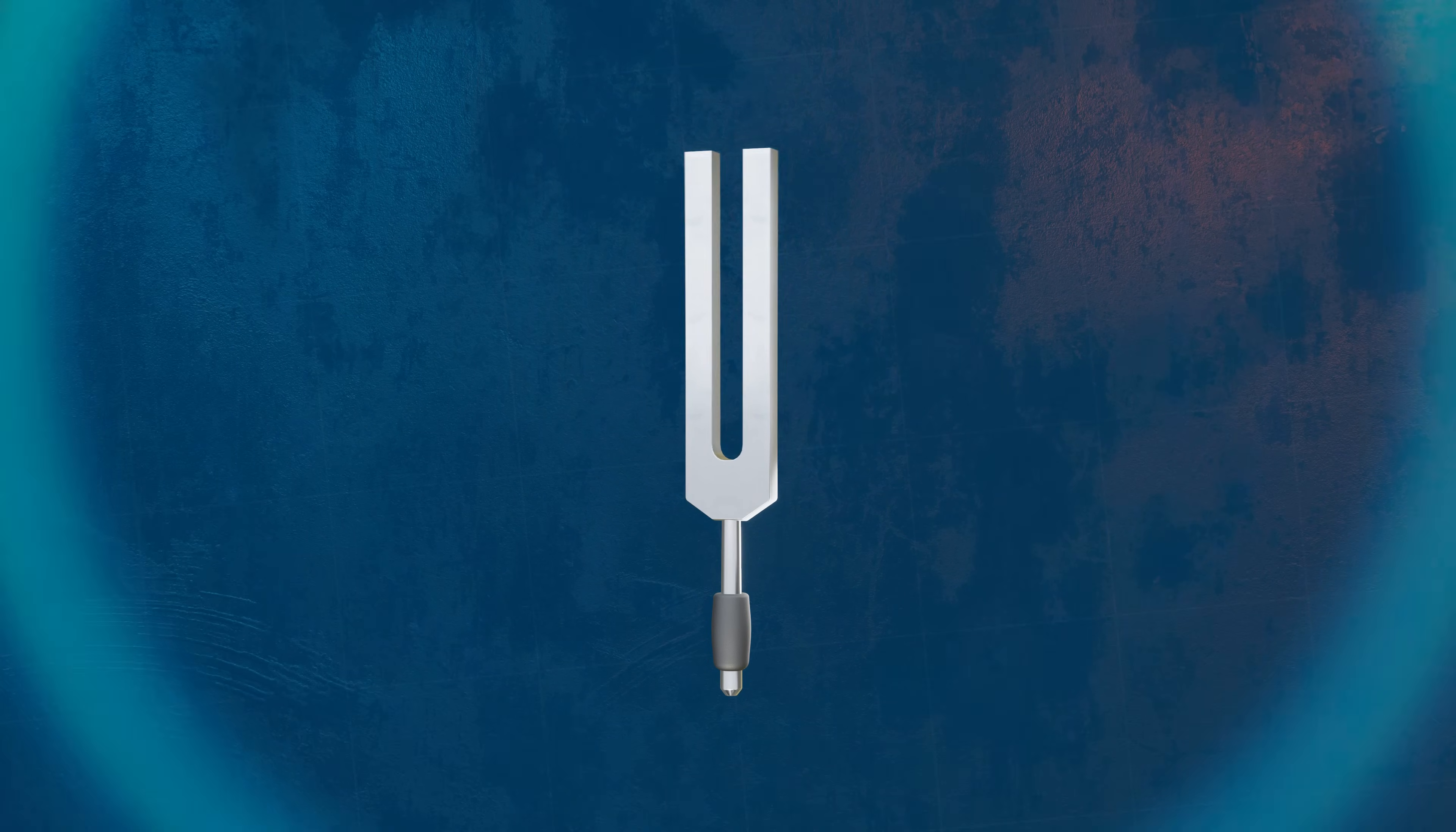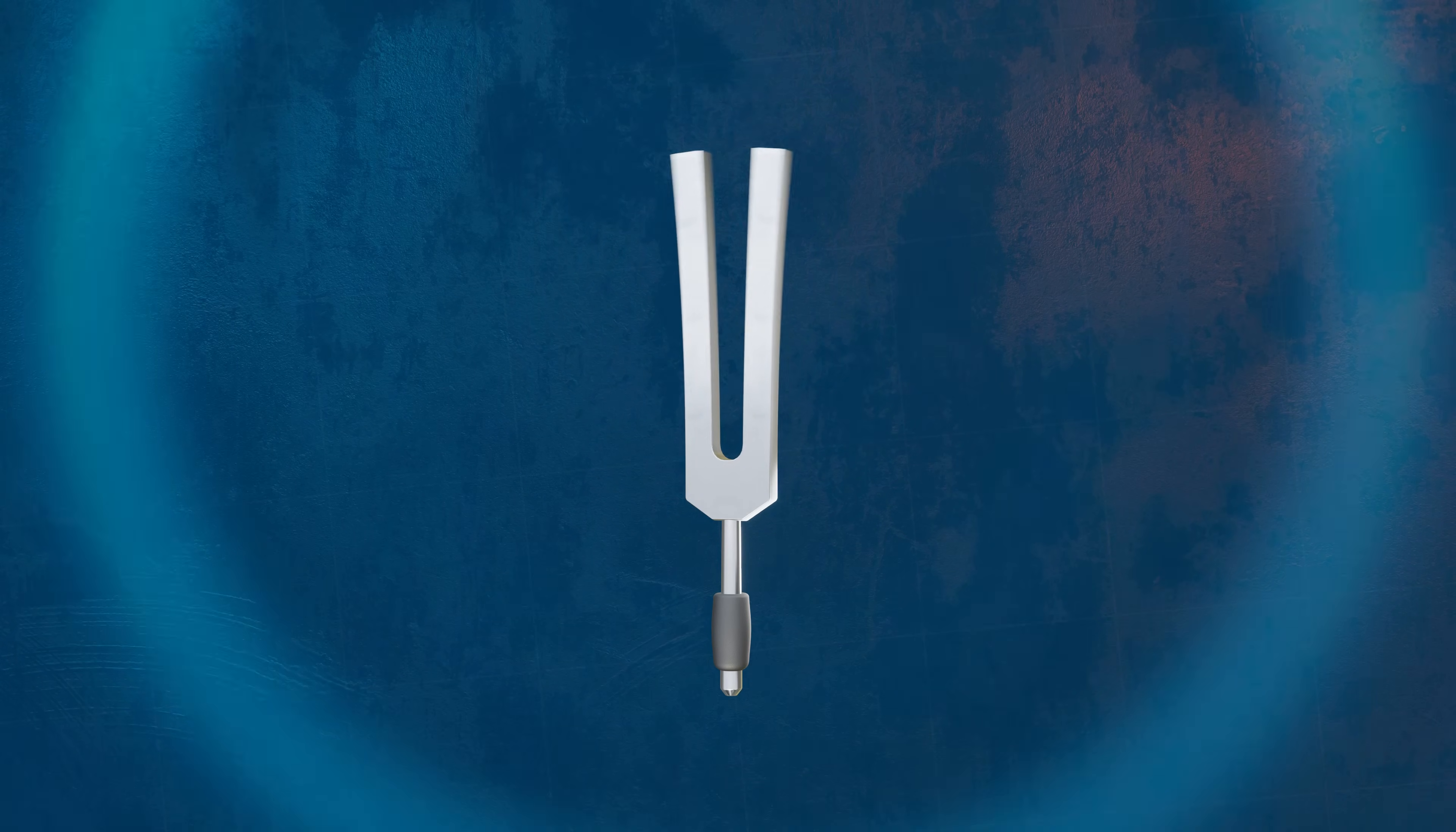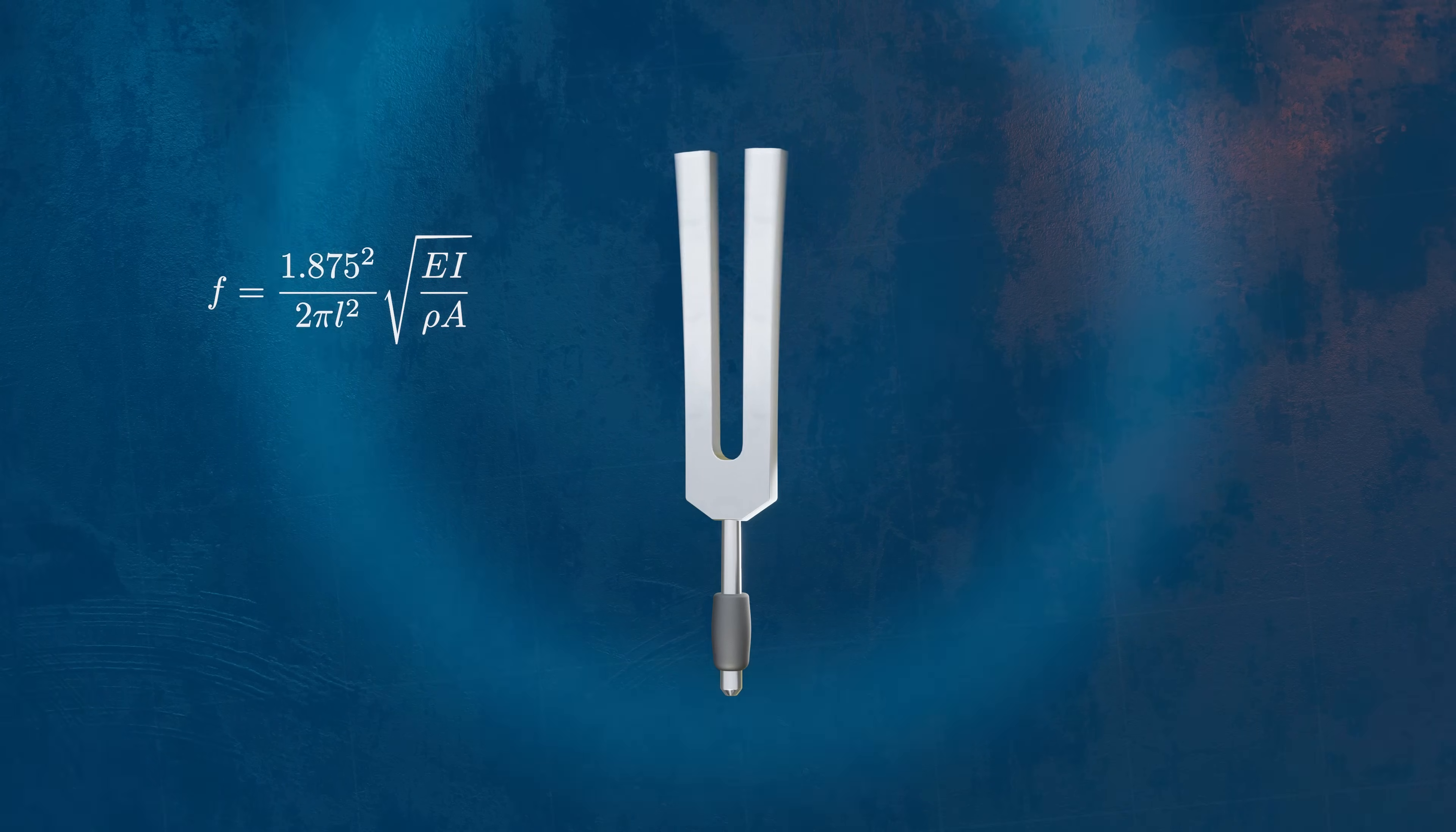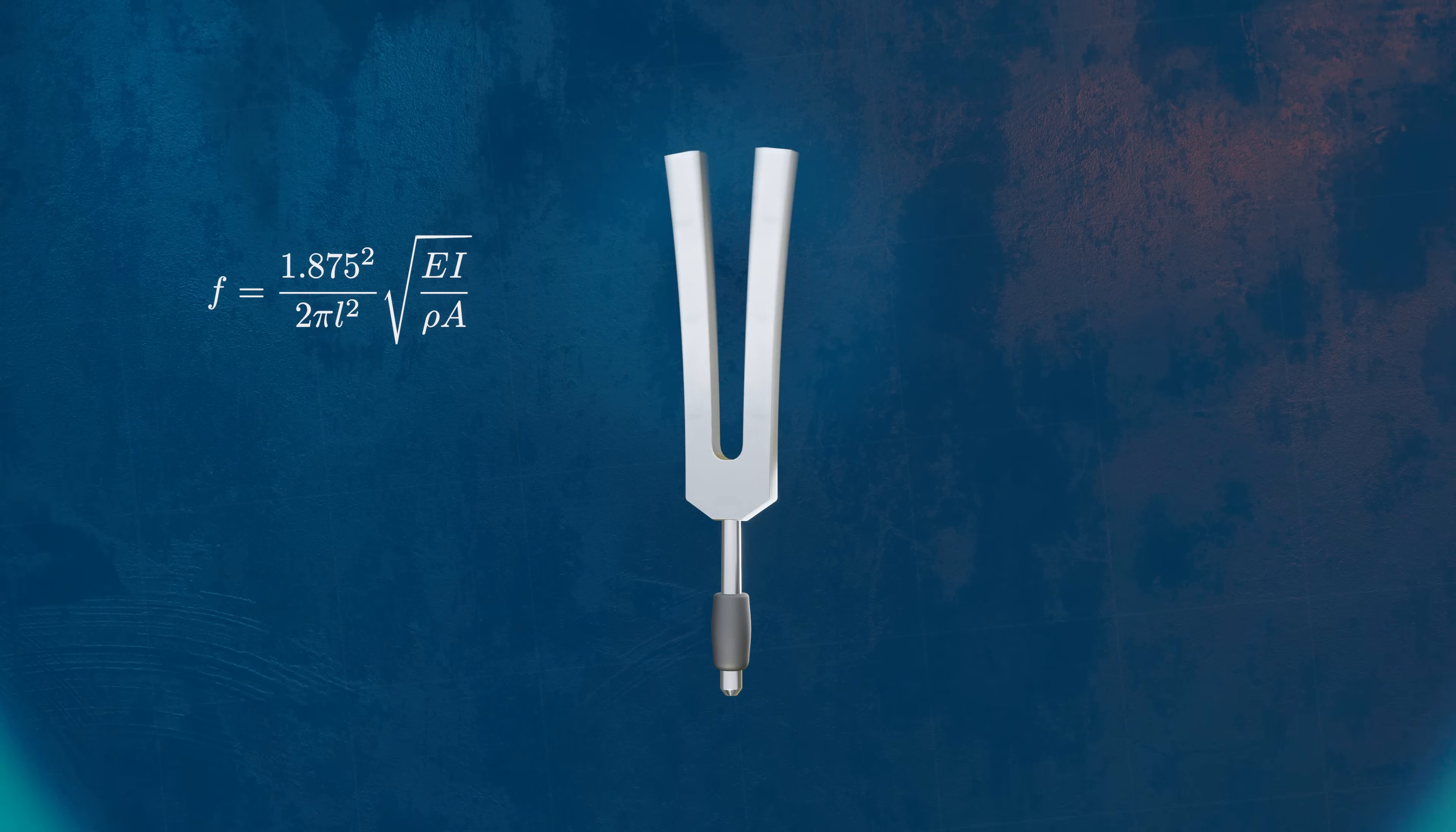By assuming that the prongs behave like cantilever beams in bending, beam theory can be used to derive a formula for the natural frequency of the fork. The density, length, and cross-section of the prongs can be calibrated to obtain the desired tone.